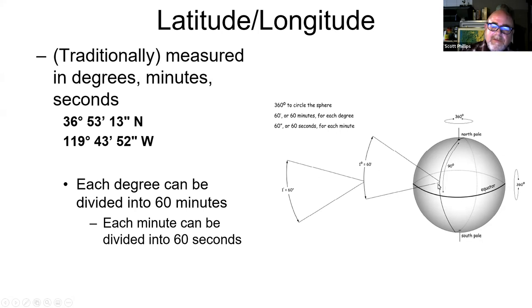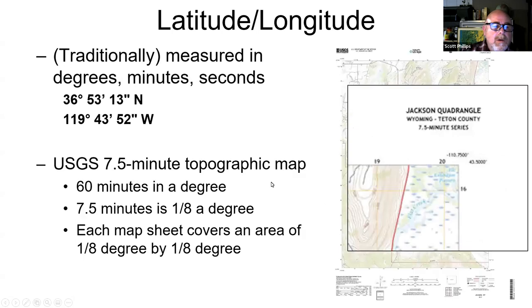Degrees can be divided into 60 minutes, a minute can be divided into 60 seconds. Where you might see this in practice is that sometimes map series will be identified as something minute series. For example, U.S. Geological Survey topographic maps are what are called 7.5 minute series.